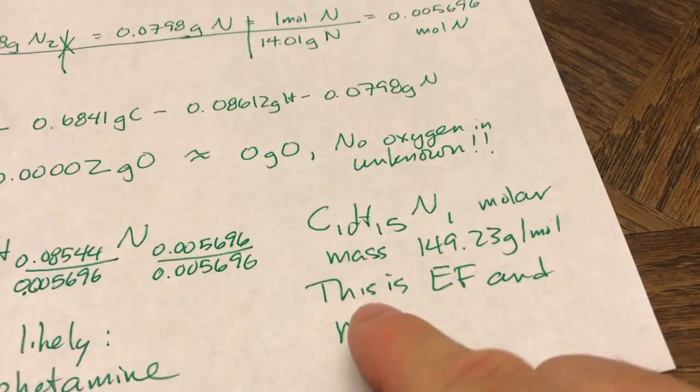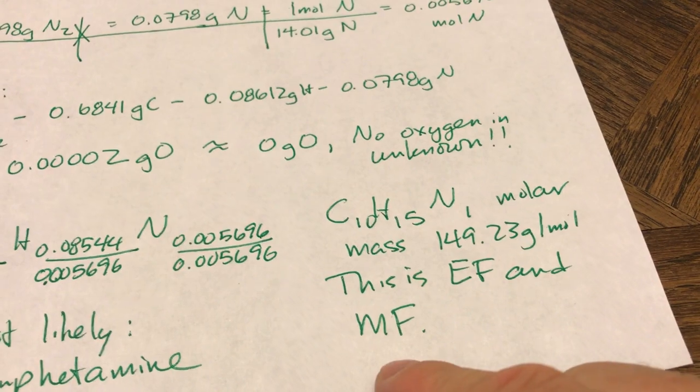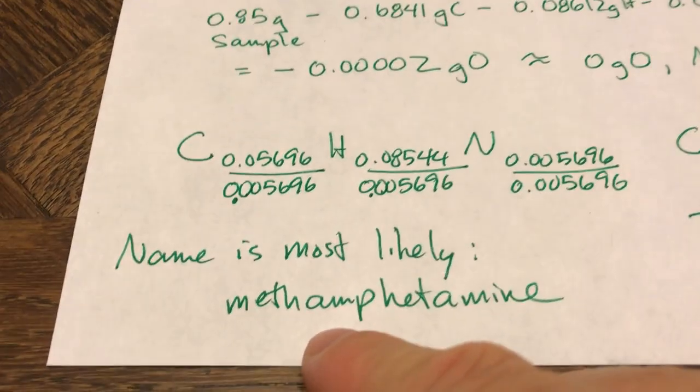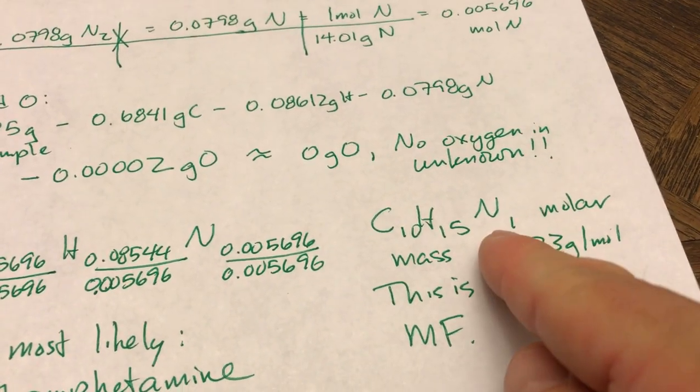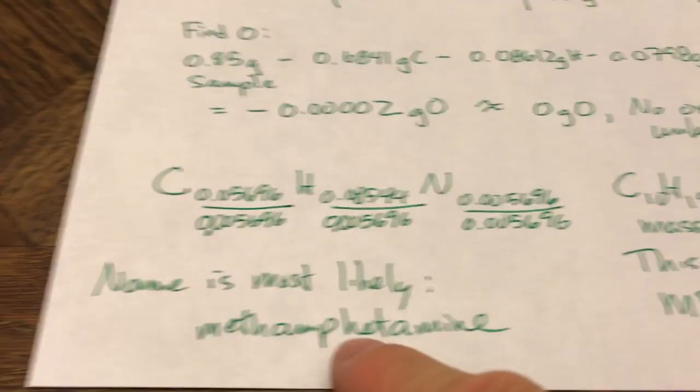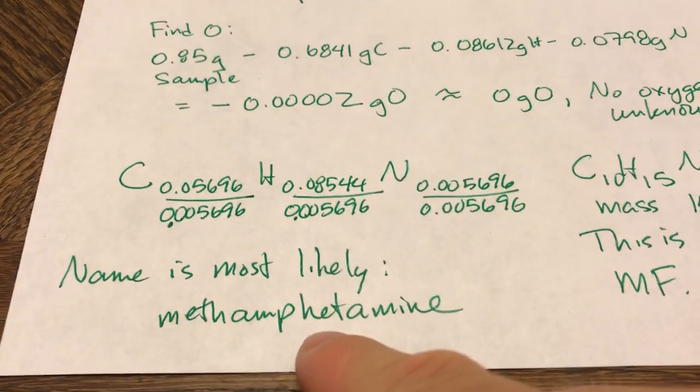That means that this is the empirical formula and the molecular formula. And when I looked it up, the first hit on Google was that the formula for C10H15N, I couldn't put in the one, it didn't bring anything up. But it came up as methamphetamine.